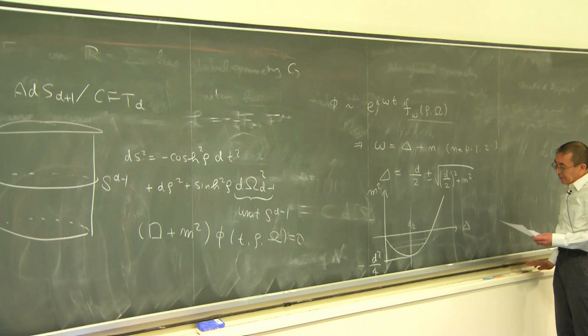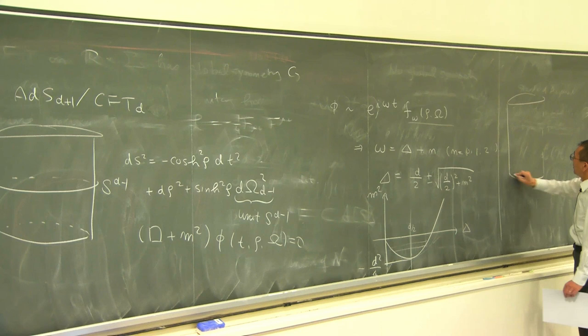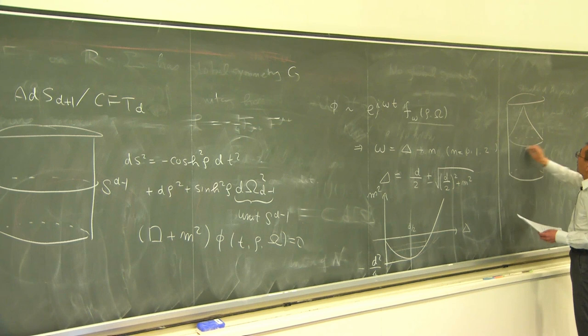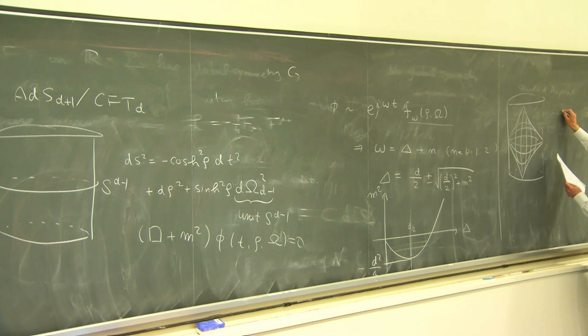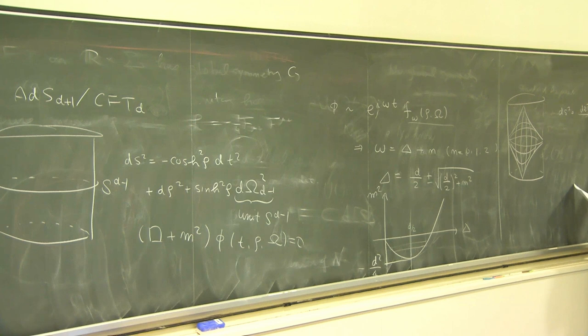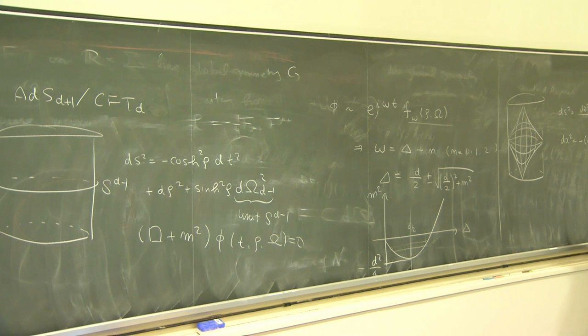There is also a choice of Poincaré coordinates, which will become useful later. In Poincaré coordinates you only cover some fraction of the boundary and also the interior. In this coordinate the AdS metric can be expressed as dz squared plus dx squared over z squared, where dx squared equals minus dx_0 squared plus the sum of dx_i squared.